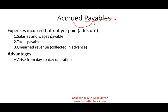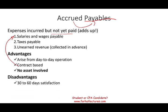The advantage of accrued liabilities is they arise from day-to-day operations, are contract-based (based on your pay cycle agreement), and no asset is involved as collateral. The disadvantage is the obligation is typically due in 30 to 60 days, and for items like salaries and wages, no employee waits more than two weeks. The key downside is you still have an expense that was incurred — it must be paid.